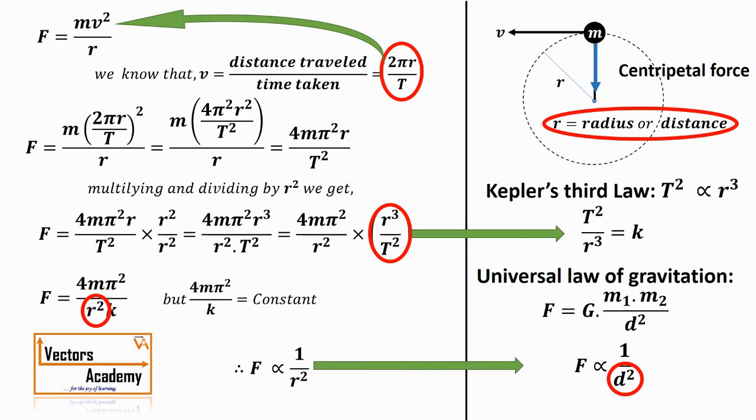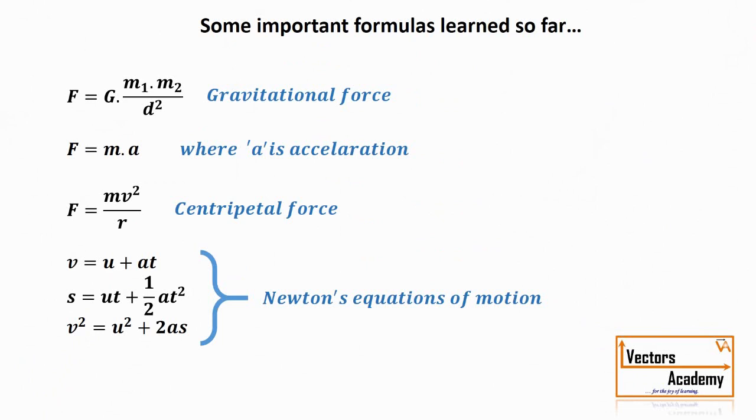This is how Newton arrived at the conclusion that gravitational force between two objects is inversely proportional to the square of distance between them. Now make a note of these important formulas we have learned so far.